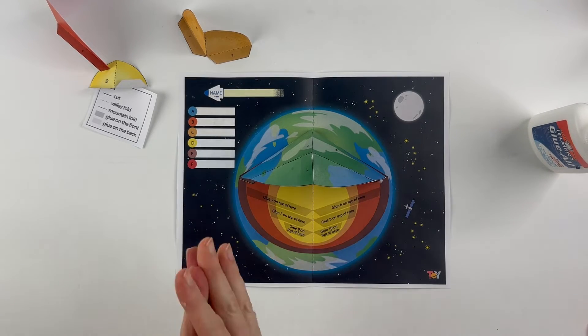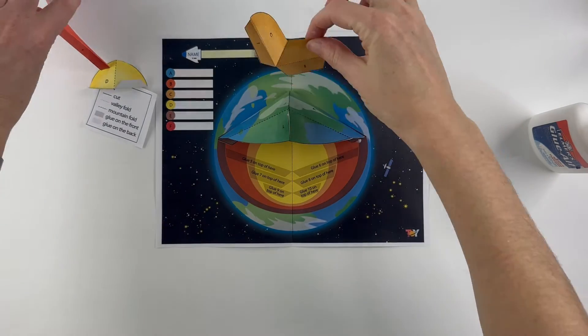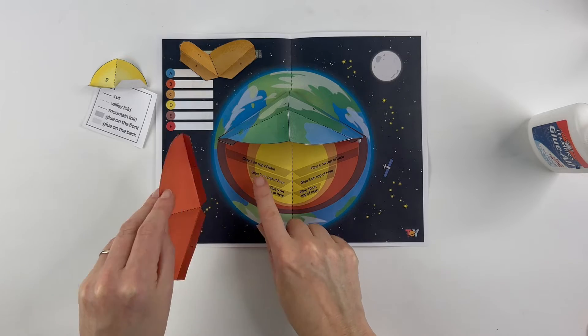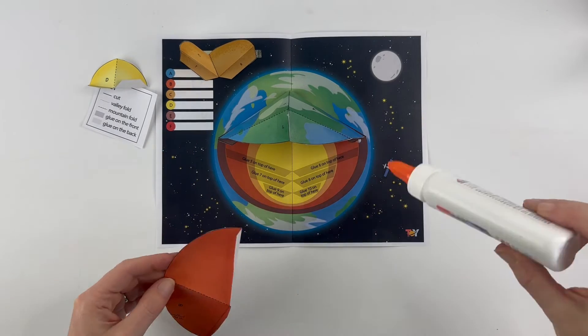And then it's really this simple for the rest of the card. The next one right here, letter B, has a five and a six on it. So the five and the six get glued right there.